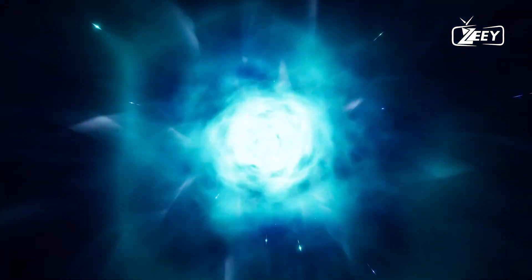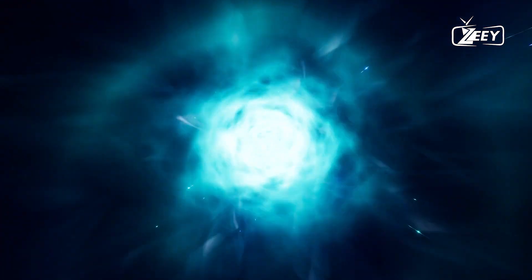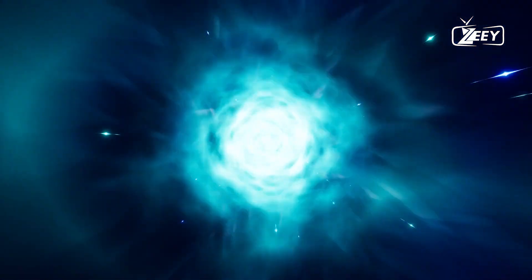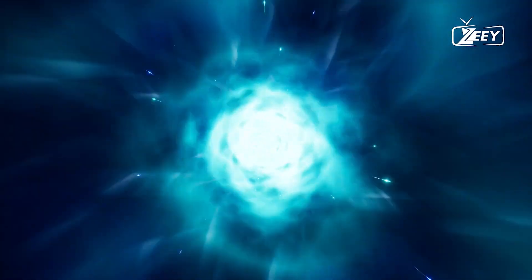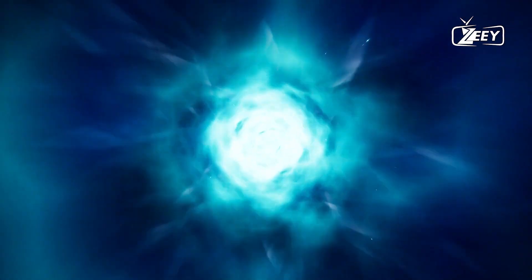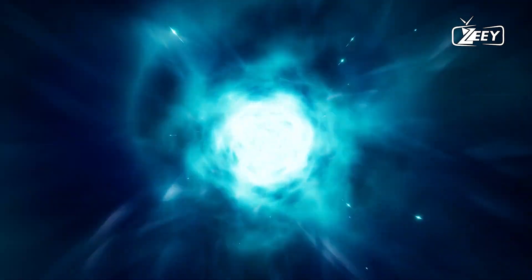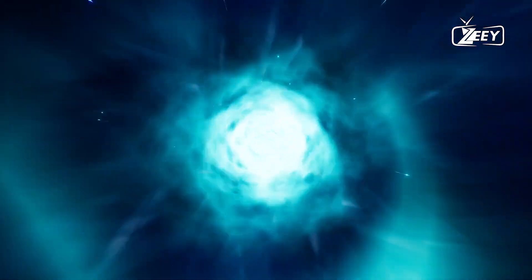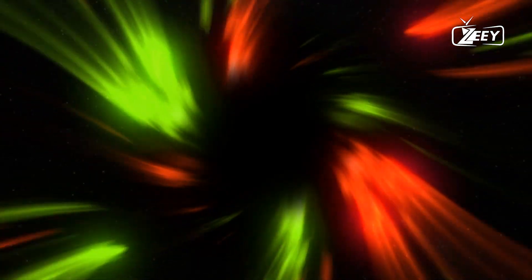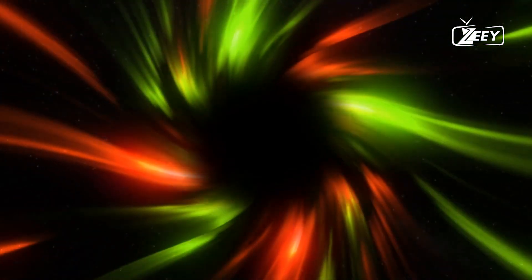For the longest time, the common consensus was that Andromeda was two to three times larger than that of the Milky Way, meaning we were most certainly doomed. The bigger fish always wins, after all. But there may just be a sliver of hope. More recent studies suggest that the two galaxies might actually be closer in size than initially believed.